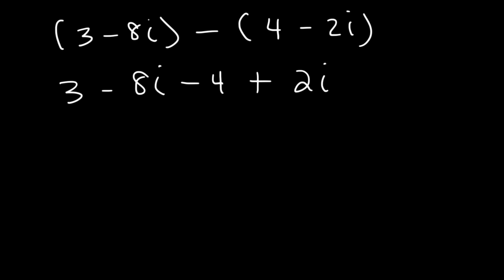Now let's combine like terms. So 3 minus 4 is negative 1, and negative 8i plus 2i is negative 6i. And so this is the answer.